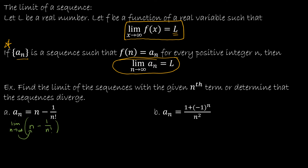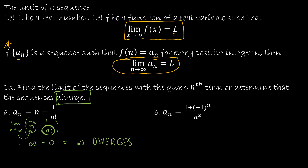If I'm trying to plug in infinity for n, as n increases without bound, the n term is going to increase without bound. And as I take 1 over n factorial, so as this value increases without bound, 1 divided by a very large number gets closer and closer to 0. So this is infinity minus 0, or infinity. Now, is that a limit? No, it is not — so this actually diverges.